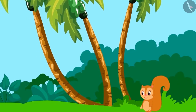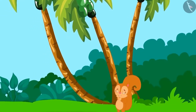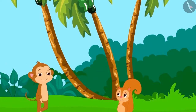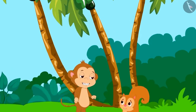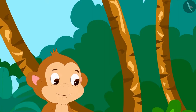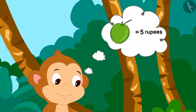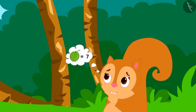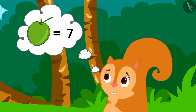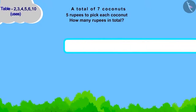Now, Chanda had to pick coconuts from a coconut tree. But the tree was very high. Therefore, she called Babban for help. Babban told Chanda that he would take five rupees for picking each coconut. Chanda had to get a total of seven coconuts picked. Now, Chanda is thinking, how much money will she have to pay to Babban?